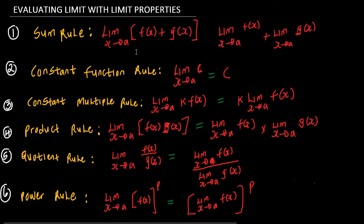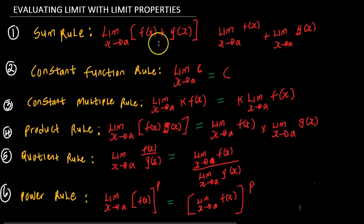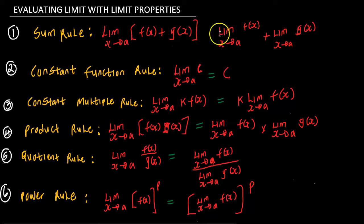The first property is what we know as the sum rule. This rule states that the limit of two functions, f of s and g of s, is equal to the sum of their limits, as you can see.